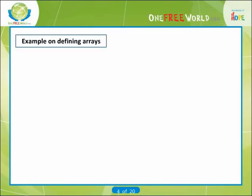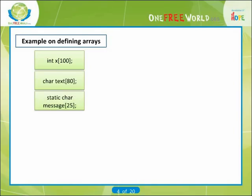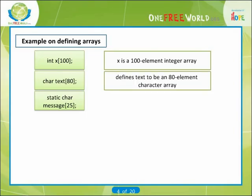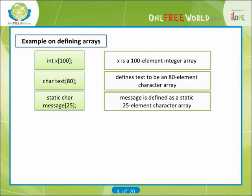Here are a few examples on defining arrays. Several typical one-dimensional array definitions are shown below: int x[100], char text[80], static char message[25]. The first line states that x is a 100-element integer array, and the second defines text to be an 80-element character array. In the third line, message is defined as a static 25-element character array.